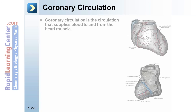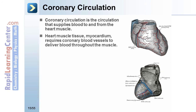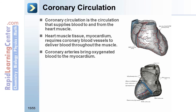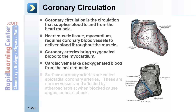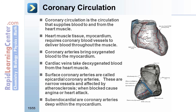Coronary circulation is the circulation that supplies blood to and from the heart muscle. Heart muscle tissue — the myocardium — requires coronary blood vessels to deliver blood throughout the muscle. Coronary arteries bring oxygenated blood to the myocardium; cardiac veins take deoxygenated blood from the heart muscle. Surface coronary arteries, called epicardial coronary arteries, are narrow vessels affected by atherosclerosis — when blocked, they cause angina or heart attack. Subendocardial coronary arteries run deep within the myocardium.